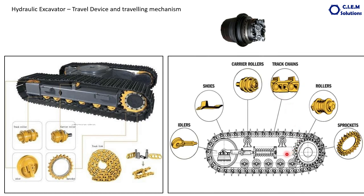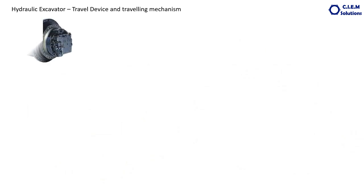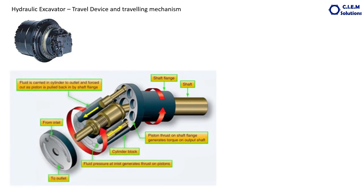You can see in detail how the components look. There is one more component here called the track adjusting cylinder and also a spring. The purpose and construction we will see in detail. First, we will go to the travel device. The travel device mainly has an input device - a power input device - which is an axial piston motor. We have explained in detail in a separate video about the hydraulic motor, however I will brief you here.